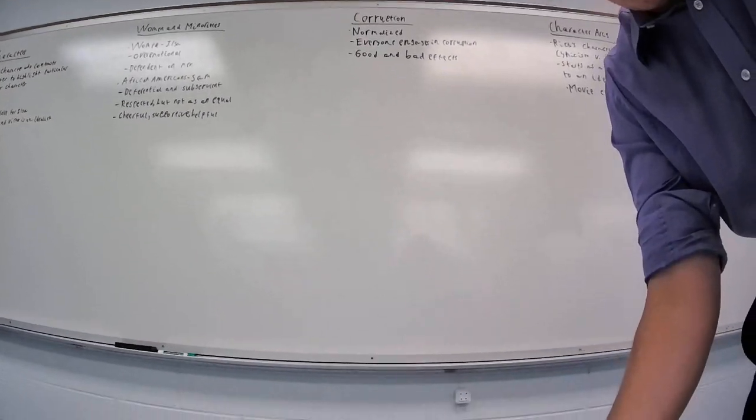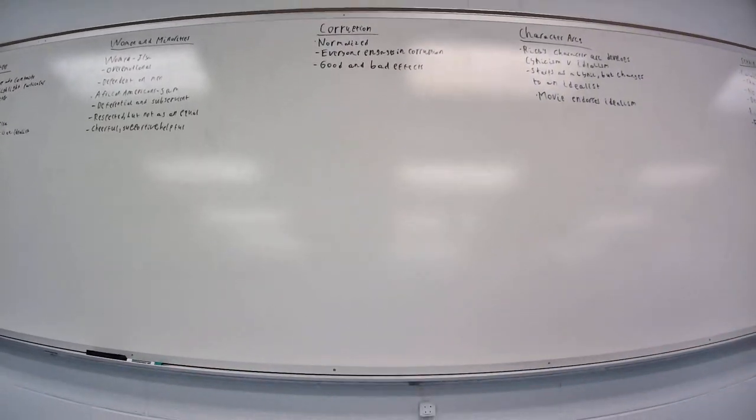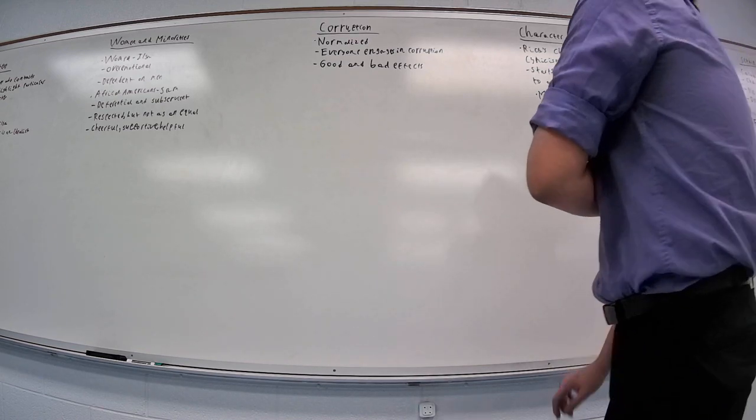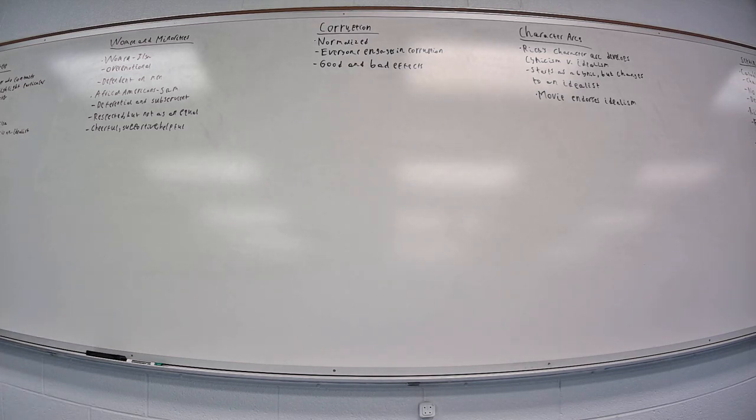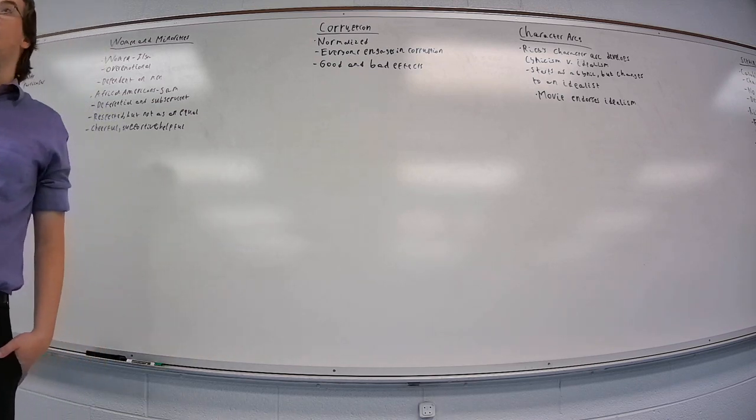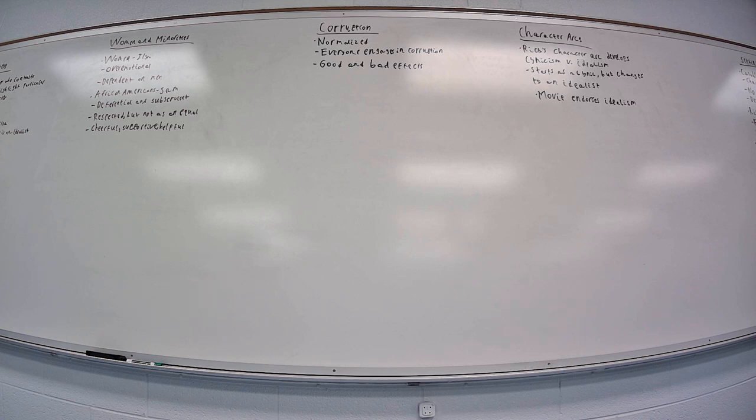Moving on to prompt three over corruption. Not a whole lot I'm going to talk about here. Just the big takeaway with how this film develops the theme of corruption is that corruption is just normalized in Casablanca. When in the city of Casablanca, corruption is just a part of everyday life. Everyone engages in corruption. Everyone has to do some illegal or shady stuff just to get by in this city, in this time. And you have both good characters and bad characters engaging in corruption.